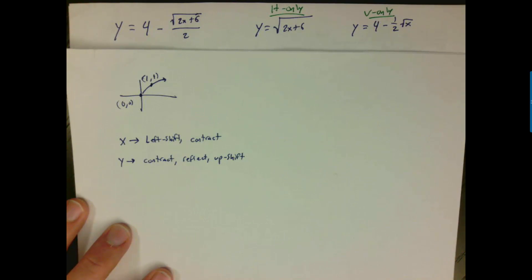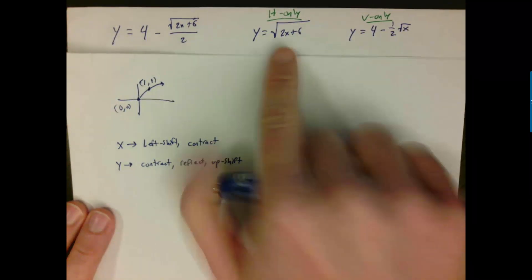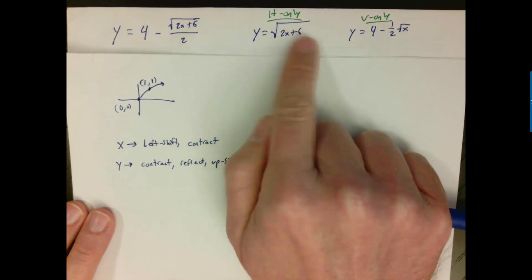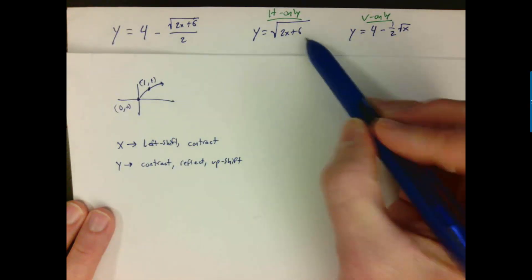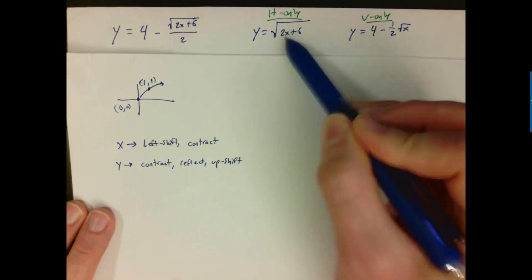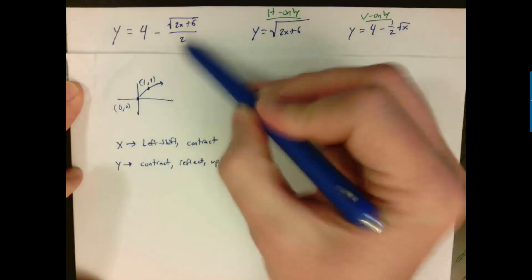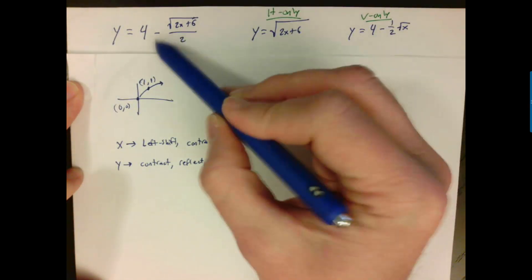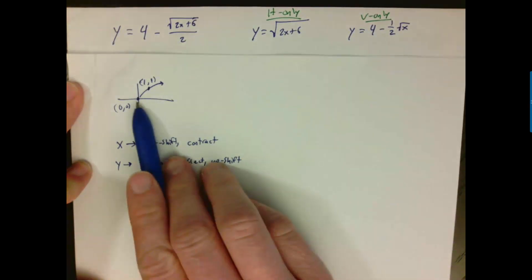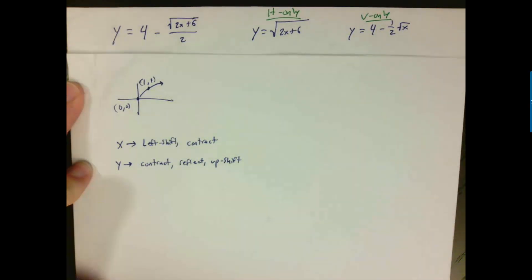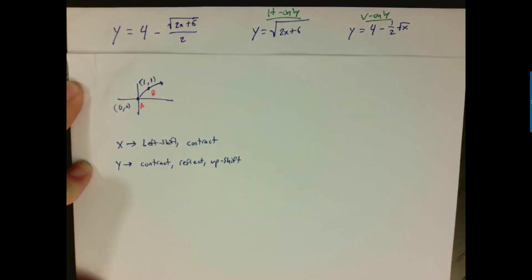To summarize the original question: looking at √(2x + 6), the x operations are multiplying by 2 and adding 6. Undoing those in order means: first a left shift by 6 (undo add 6), then a contraction by 2 (undo multiply by 2). For the y values: first contract by 1/2, then reflect (negative sign), then shift up by 4. This gives us the complete sequence of transformations to apply.